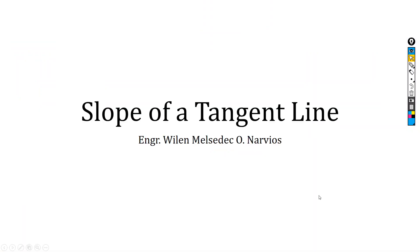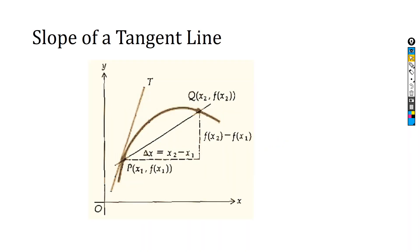Good day everyone. In this section we discuss the slope of a tangent line. We arrive at a suitable definition of the tangent line to the graph of a function at a point on the graph. We proceed by considering how we should define the slope of the tangent line at a point. As you can see in this figure, we have points P and Q, and this line is called the secant line traversing the two points P and Q.